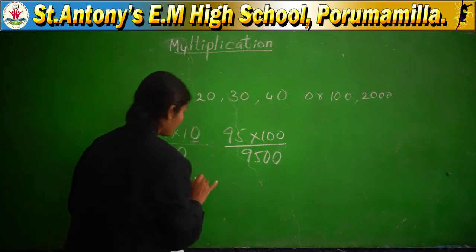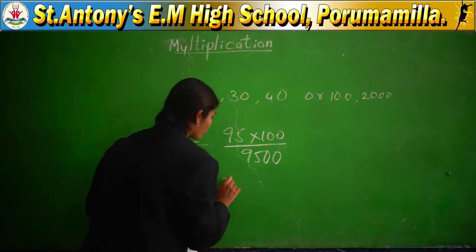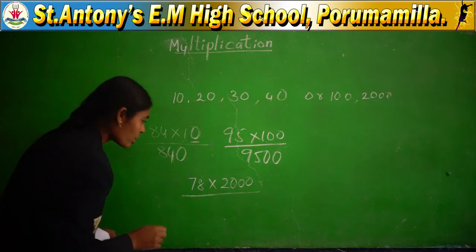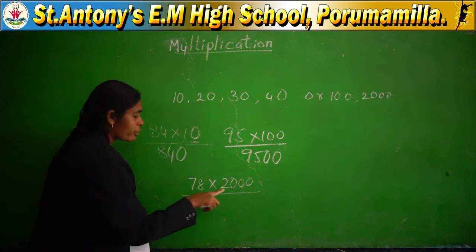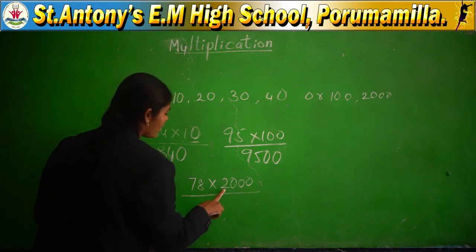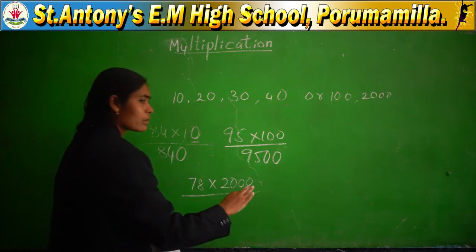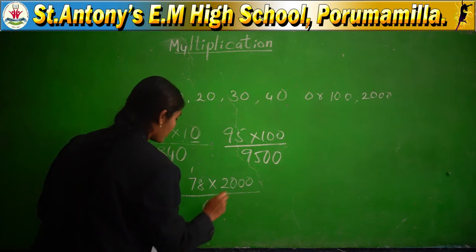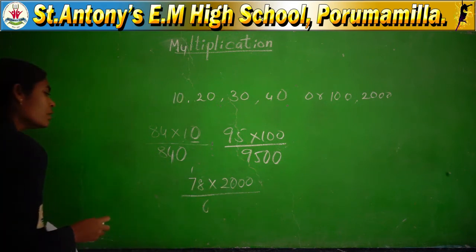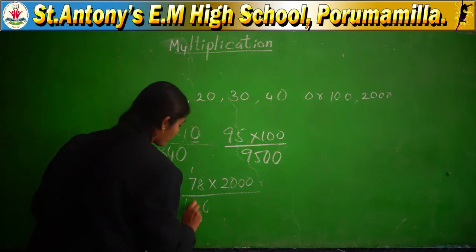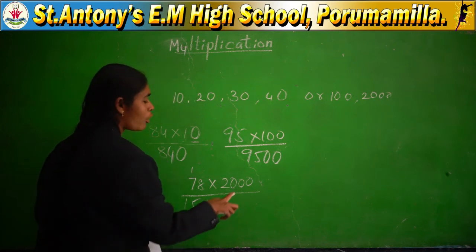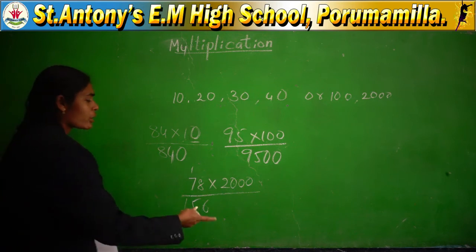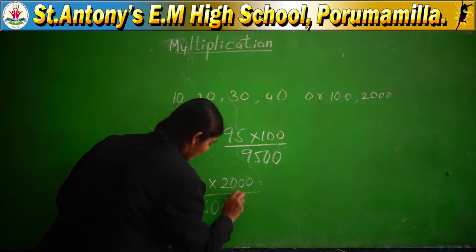For 78 into 2000: the valuable digit is 2. 8 twos are 16, 7 twos are 14 plus 1 is 15 — giving 156. How many zeros are in the multiplier? Three. Directly add three zeros to the right of the product: 156,000. Don't forget the zeros — without the zeros the answer is not correct.